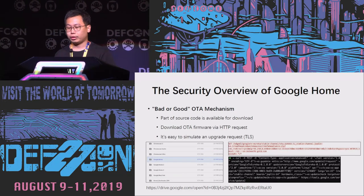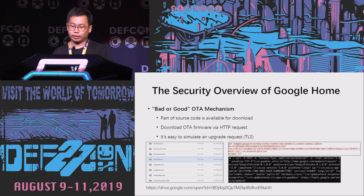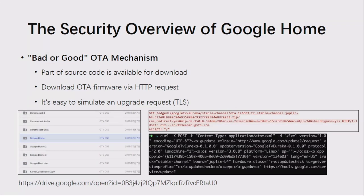Next, let's introduce the security overview of Google Home. On the OTA mechanism, the firmware and related resources of Google Home are open to the public, including bootloader, kernels, related binaries — some even with symbols. Google Home uses HTTP requests to download firmware. We can also simulate the request for device updates. The latest OTA package can be obtained with a curl command, making it easy to get the firmware and analyze it.